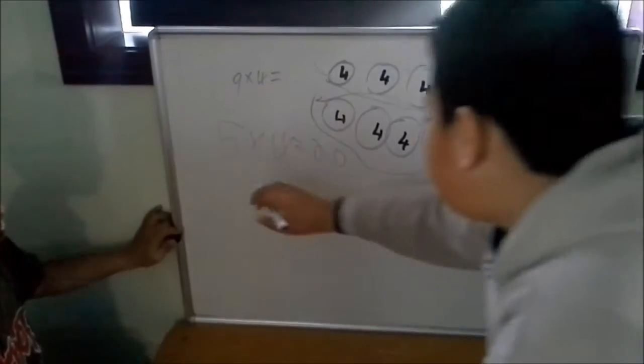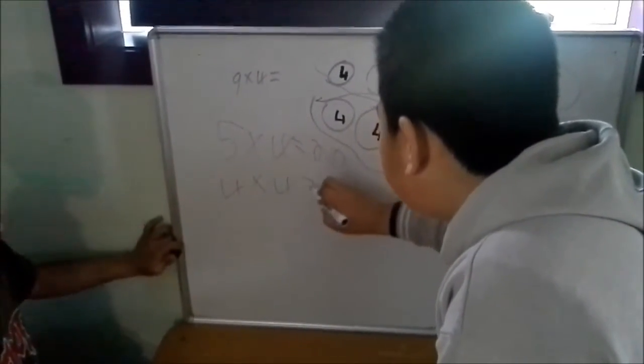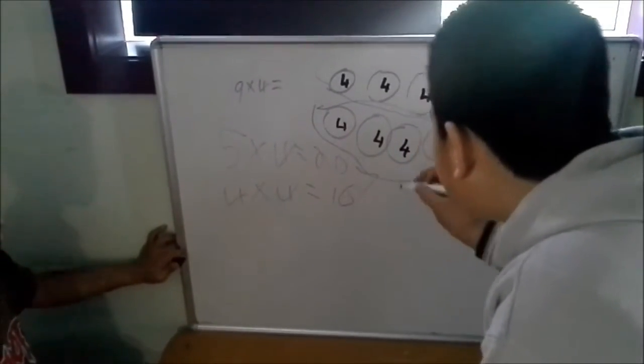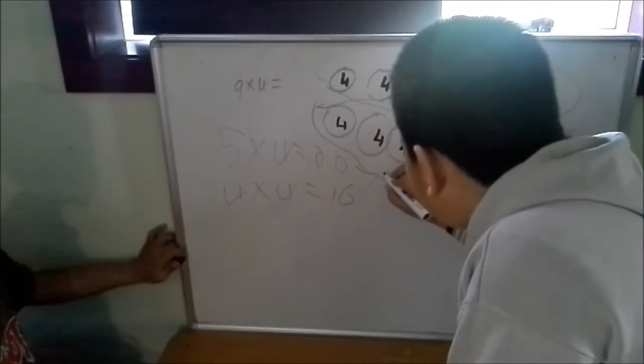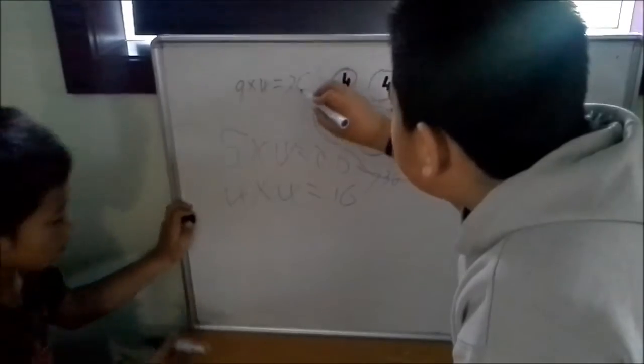So we do four times four equals sixteen. We add them together equals thirty-six. So our answer must be thirty-six.